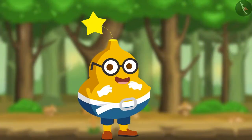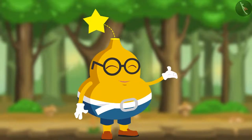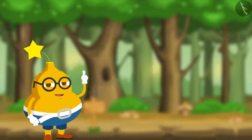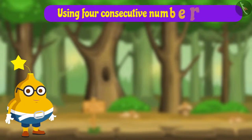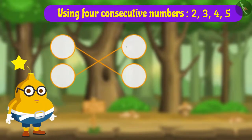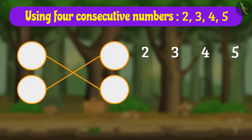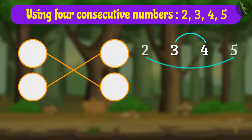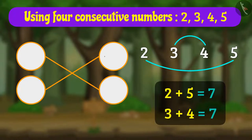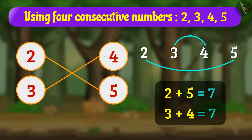Then Fruity says, 'Yes, right! And we can also use four consecutive numbers to solve the star puzzle. For this we have to take equally placed number pairs. For example, here these are the equally placed number pairs and their sum is equal. So in this way we can use consecutive numbers to fill the star.'